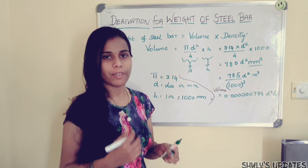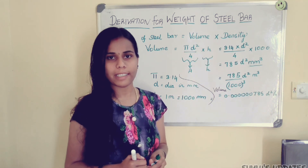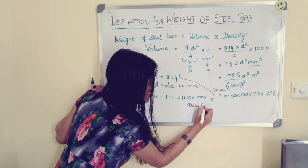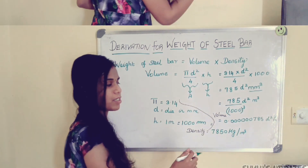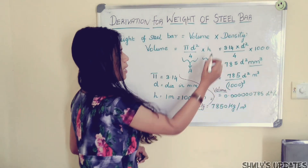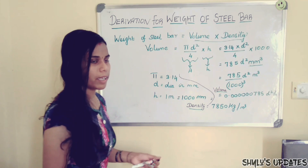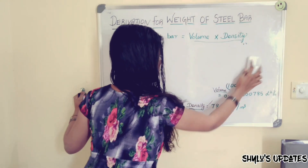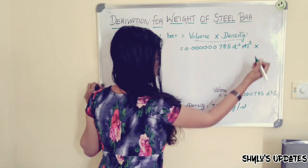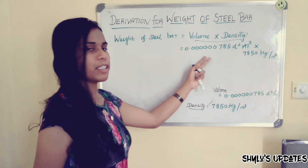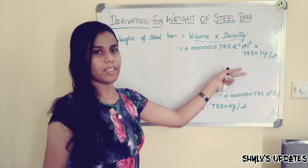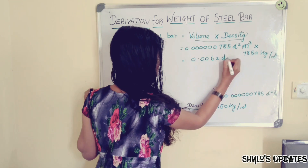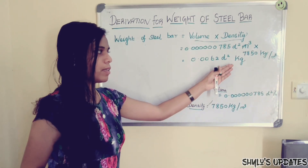Now we know the density of the steel bar. The density is 7850 kg per meter cube. Substituting this volume and density into the formula, when we solve this we get the answer 0.0062 D square kg.